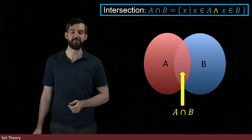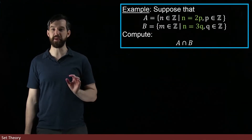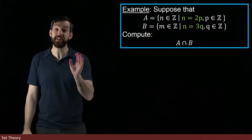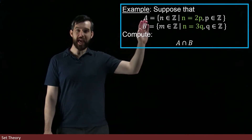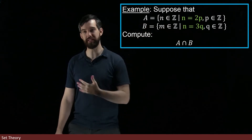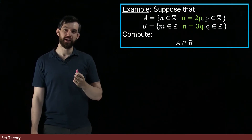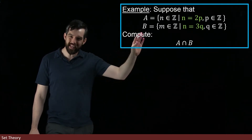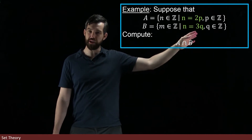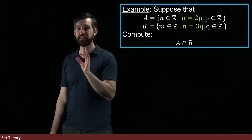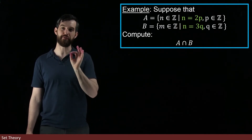Let's see an example. I'm going to have an A and a B — notice I've changed them again. A is going to be the set where n equals 2p, so this is going to be all of the even integers. B, however, is equal to the set where n equals 3q, and this is going to represent all multiples of 3.